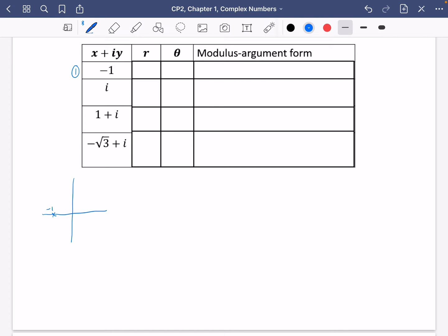Minus one is over here. So clearly the length of this line is just going to be one. And the angle that this line is travelling in this direction is going to be pi. It could be minus pi, but we take pi to be the principal argument in this case. So the modulus argument form is going to be cos pi plus i sine pi.